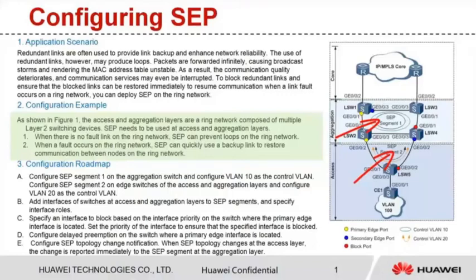SEP provides the following functions. One, when there is no fault link in the ring network, SEP can prevent loops on the ring network. Two, when a link fault occurs on the ring network, SEP can quickly use a backup link to restore communication between nodes.